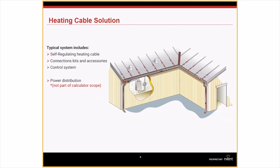Our roof and gutter calculator can design both a cable-only solution and a RIM system. For a cable-only solution, it calculates the amount of heating cable needed and suggests the necessary components and termination kits to complete the system. The calculator also provides the number and size of breakers required, though these must be provided separately and will not be included on the bill of material.